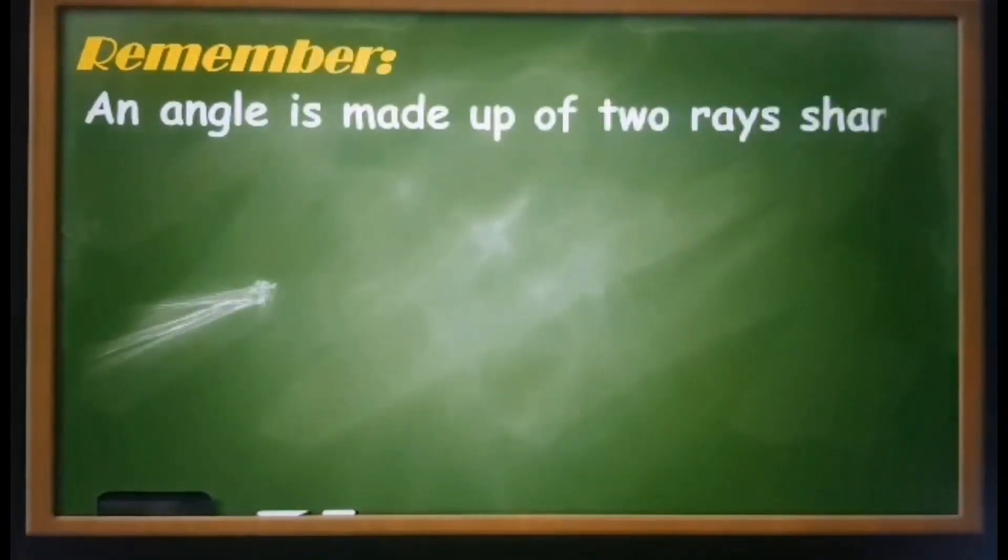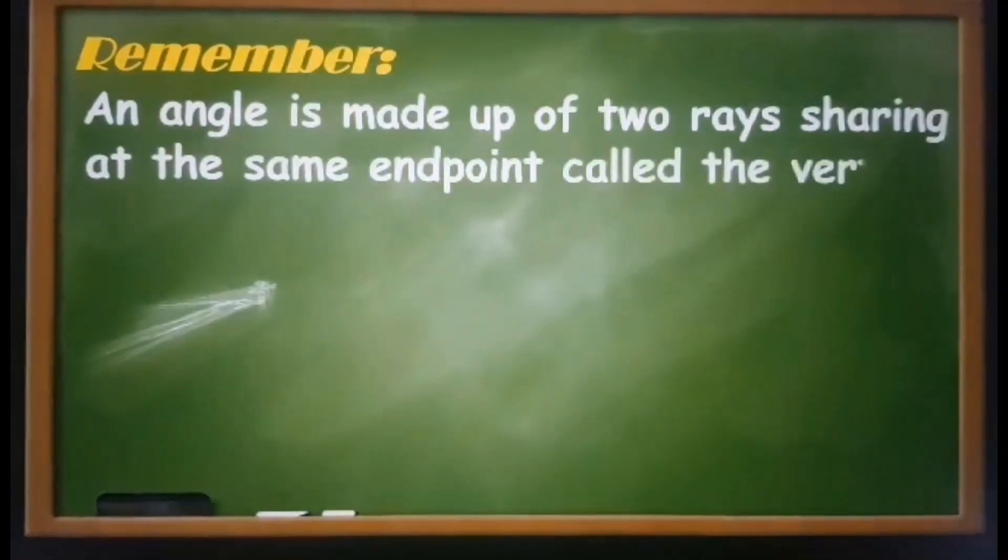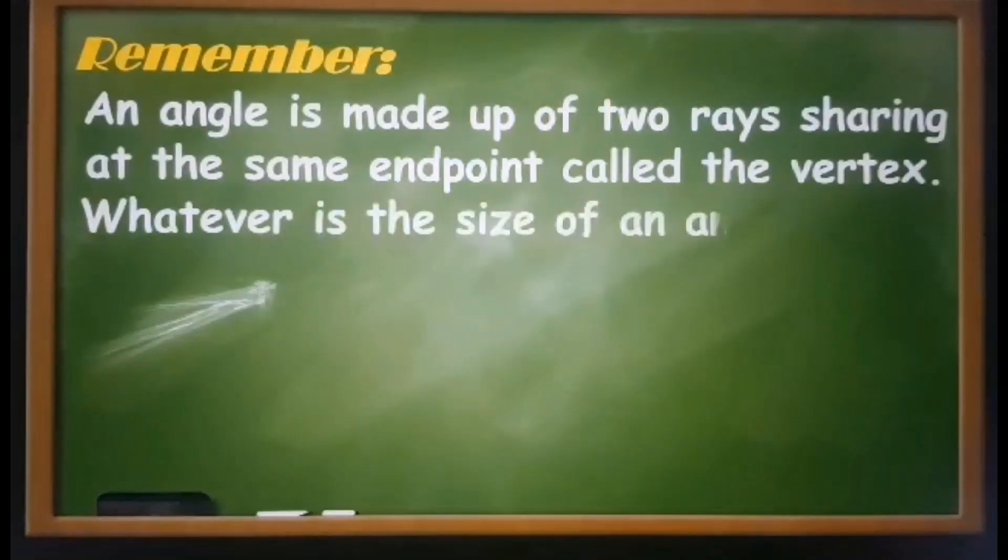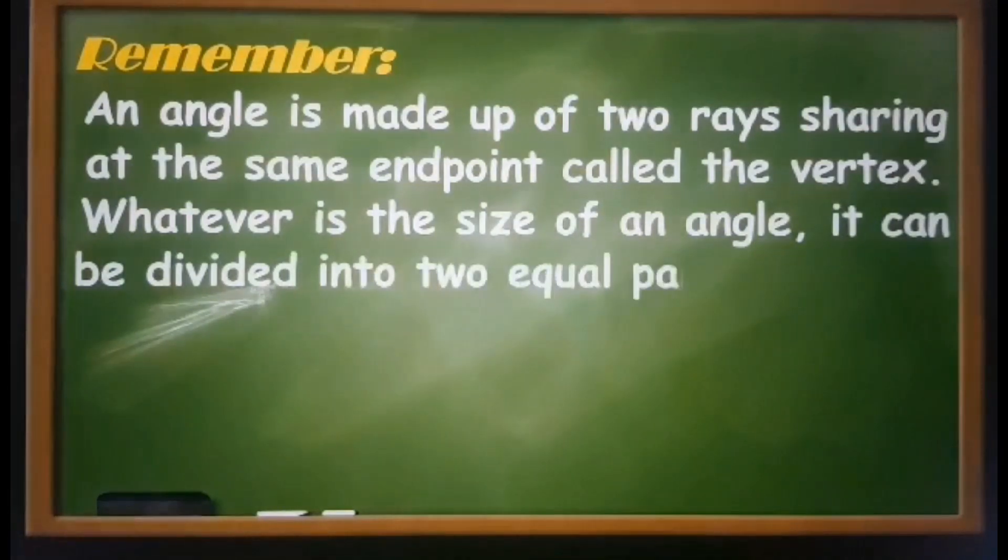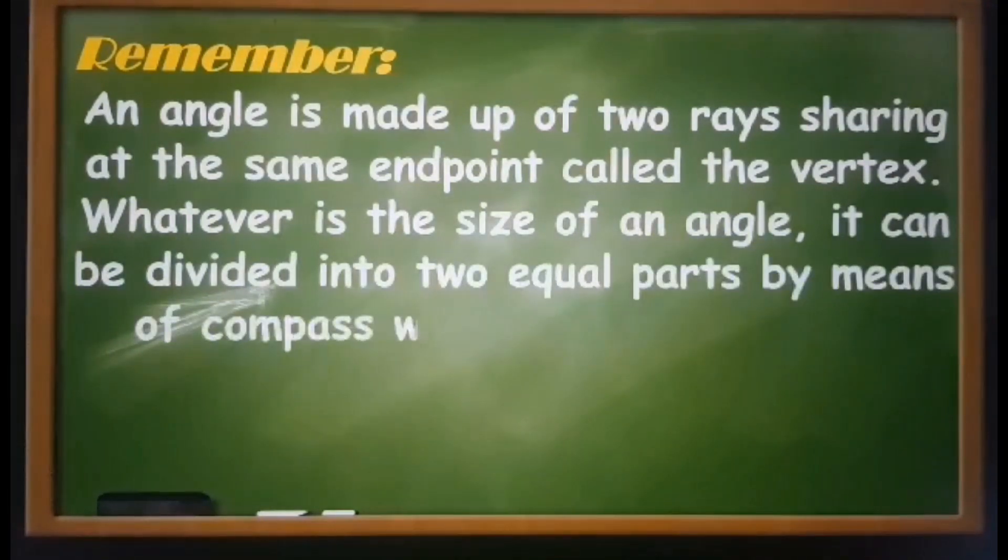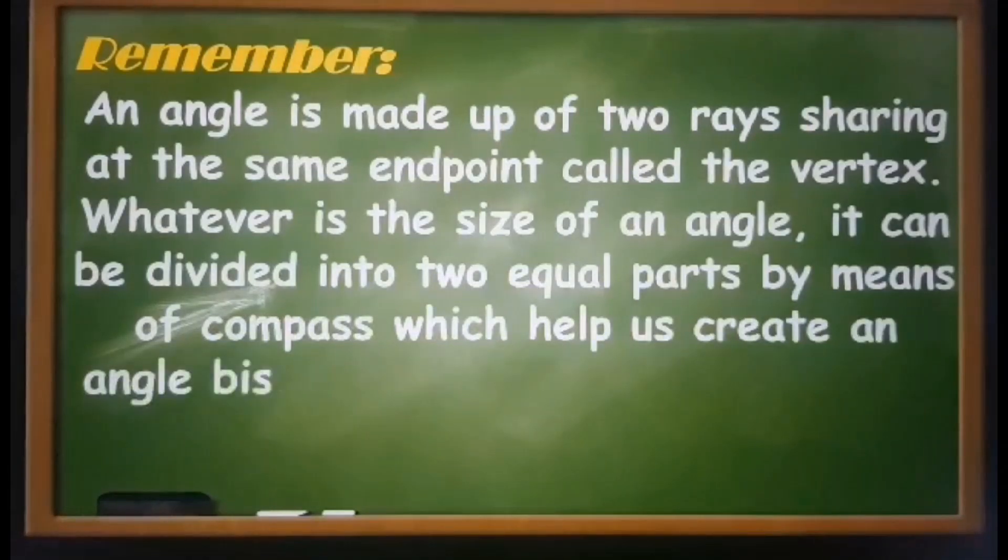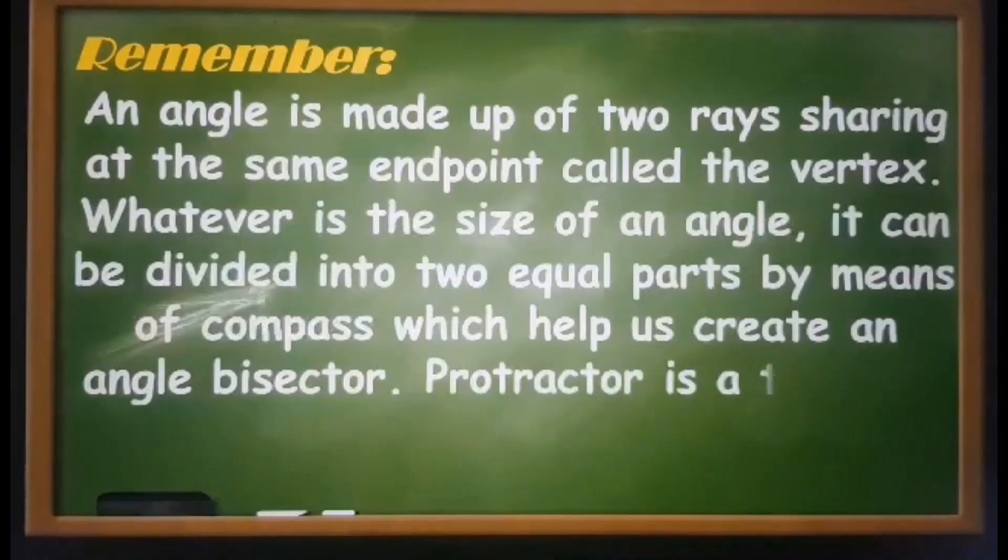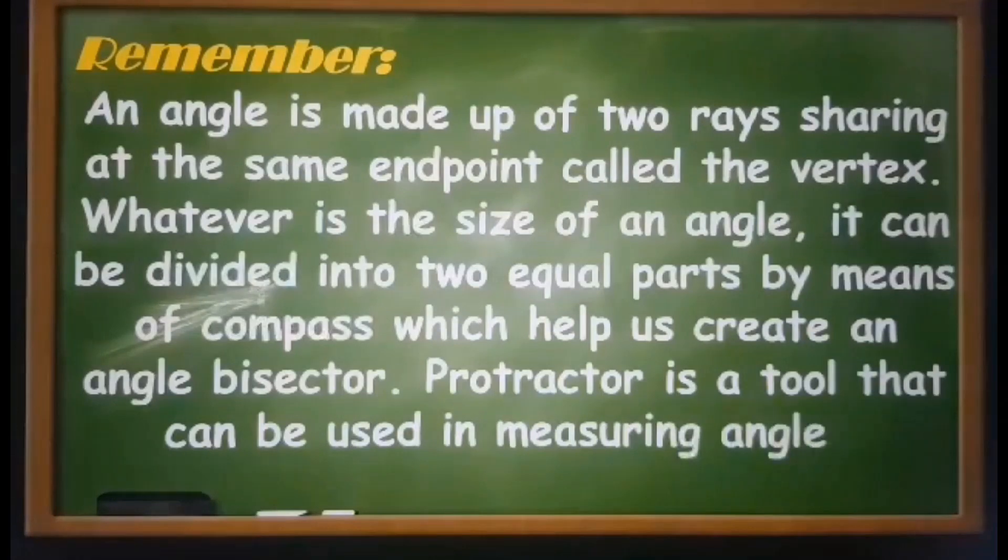Let us remember: an angle is made out of two rays sharing at the same end point called the vertex. Whatever is the size of an angle, it can be divided into two equal parts by means of compass, which help us to create an angle bisector. The protractor is a tool that can be used in measuring angles.